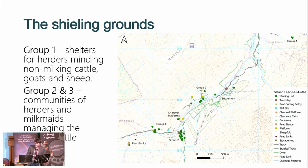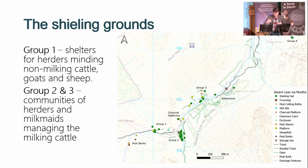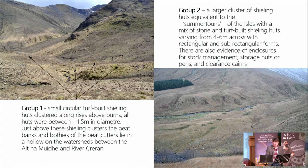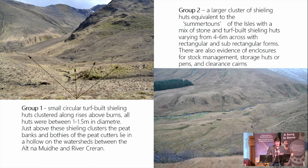This is a map of those sheiling grounds. There are two distinct groups representing two different activities. Group one is up beside the peat banks in the very higher reaches of the glen, up one of the tributary burns. These seem to be smaller structures — about one to one and a half metres across — dotted along a burnside. These aren't spaces you could spend any great deal of time in. Presumably these are places where people are coming up, taking shelter, perhaps storing certain products gathered from this part of the landscape, and perhaps where non-milking cattle and other livestock are being kept separate, requiring less supervision.